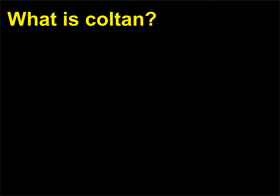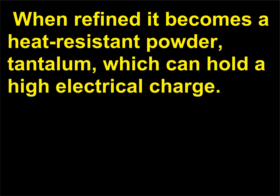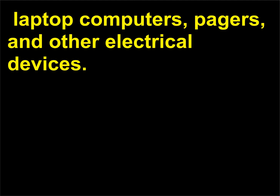What is Coltan? Coltan is the shortened name for the metallic ore columbite-tantalite. When refined, it becomes a heat-resistant powder, tantalum, which can hold a high electrical charge. These properties make it a vital element in creating capacitors, the electronic elements that control current flow inside miniature circuit boards. Tantalum capacitors are used in almost all cell phones, laptop computers, pagers, and other electrical devices.